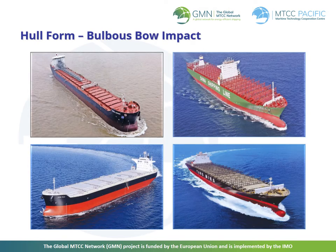A properly designed bulbous bow reduces wave resistance by producing its own wave system that is out of phase with the bow wave from the hull. This creates a cancelling effect and an overall reduction in wave making resistance. A bulbous bow works best at a certain speed range and is sensitive to ship draft. If a ship sails at a different speed and draft range than what the bulbous bow is designed for, it has no effect or, in the worst cases, even a negative effect.